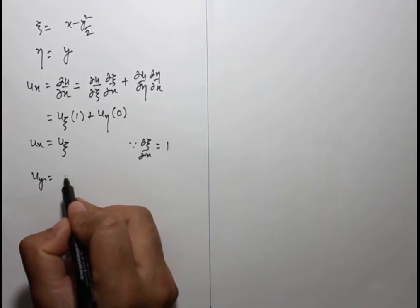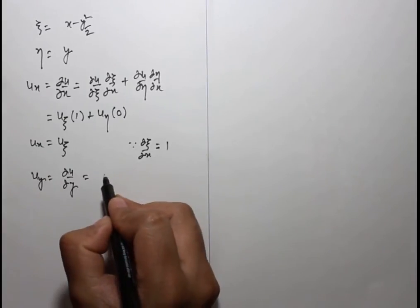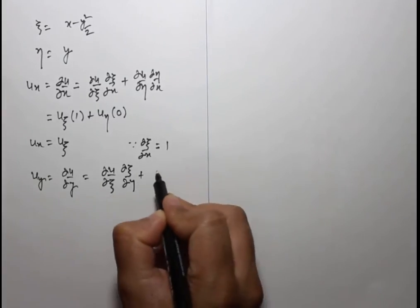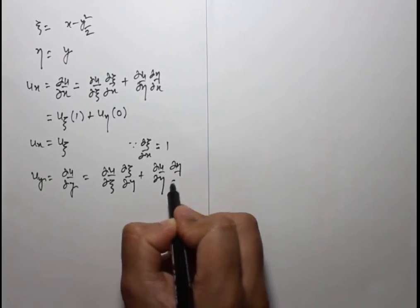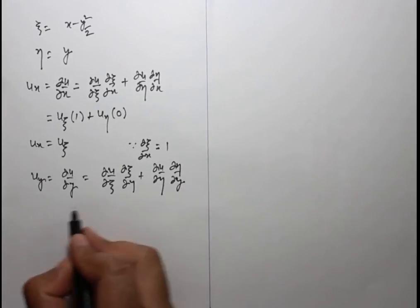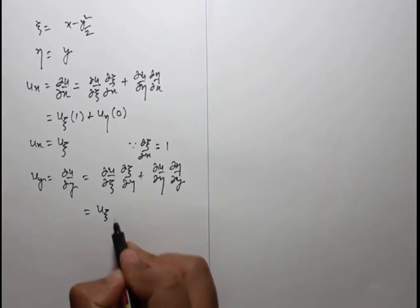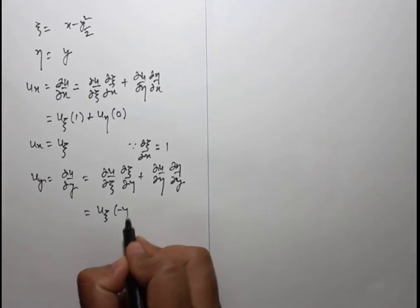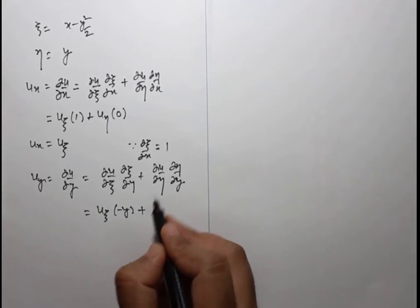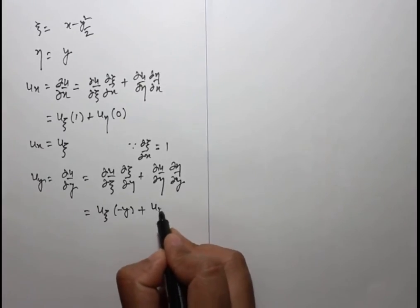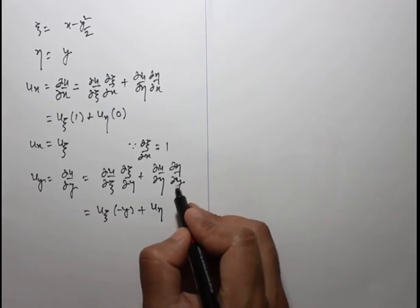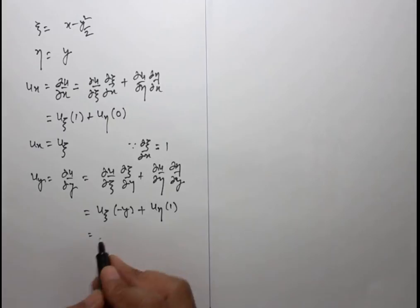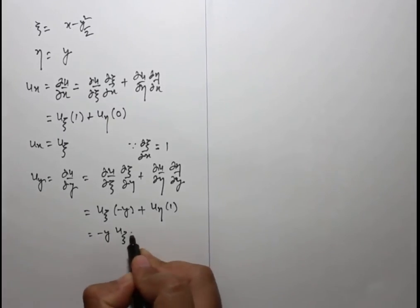For u_y by the chain rule: u_y = u_ξ (∂ξ/∂y) + u_η (∂η/∂y) = u_ξ(-y) + u_η(1) = -y·u_ξ + u_η.